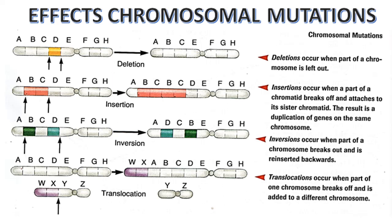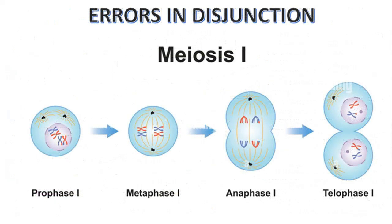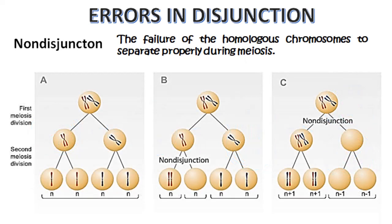This type of disorder is due to chromosomal level mutation. Let's proceed now to errors in disjunction. Many chromosome mutations result from the failure of chromosomes to separate properly during meiosis. During meiosis I, one chromosome from its homologous pair moves to each pole of the cell. An error occurs when both chromosomes of a homologous pair move to the same pole of the cell. The failure of homologous chromosomes to separate properly during meiosis is called non-disjunction.